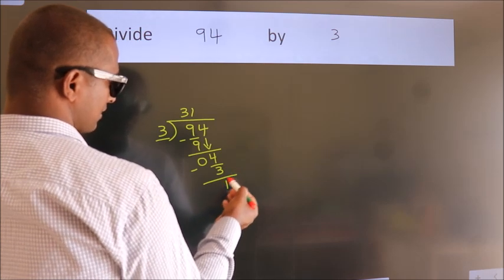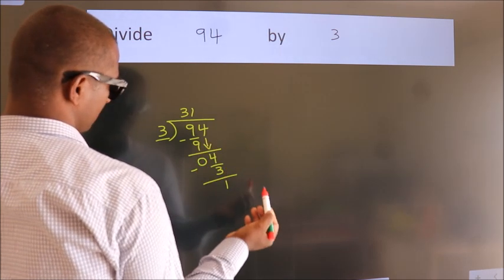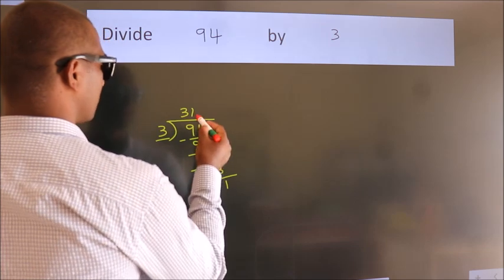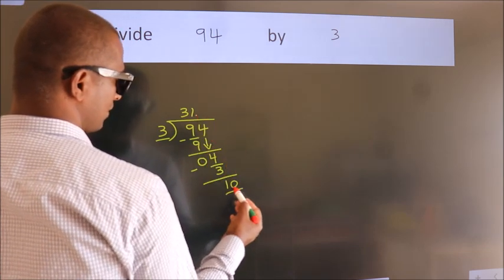We get 1. After this, no more numbers to bring it down. So what we do is, we put dot take 0. So 10.